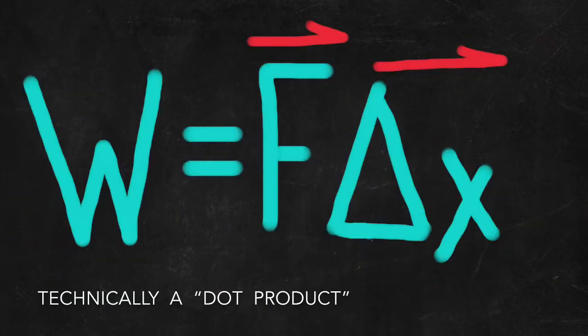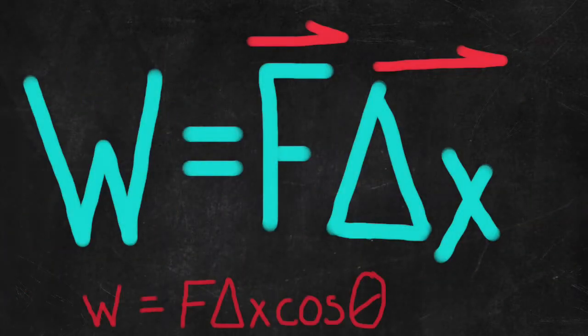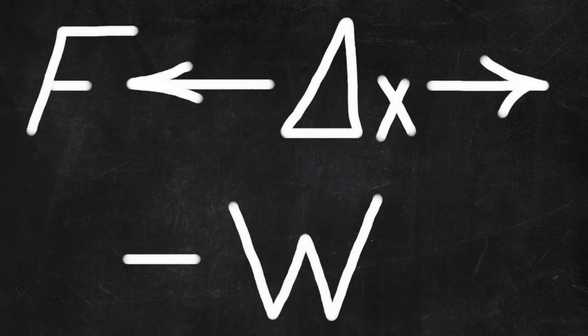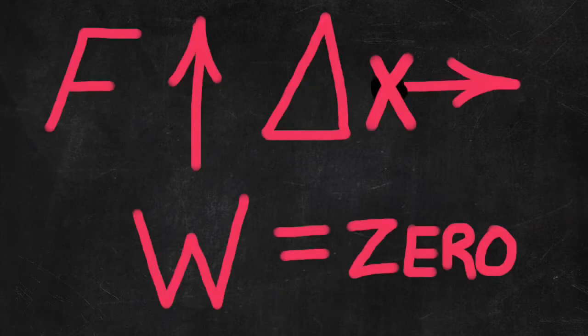So we have a definition, and the equation is the same as the definition. And it turns out that, parallel, you can have positive work done if the force and displacement are in the same direction. And you'll have negative work done if the force and displacement are in the opposite direction. But you won't have any work done if the force and displacement are perpendicular to each other.